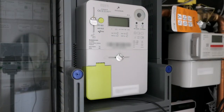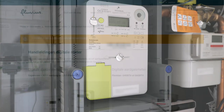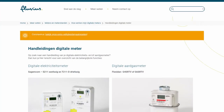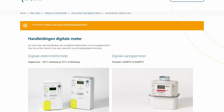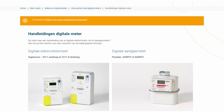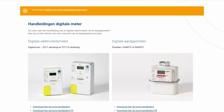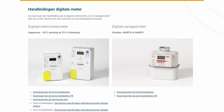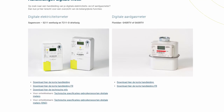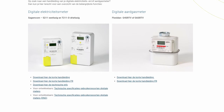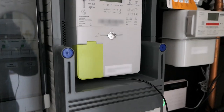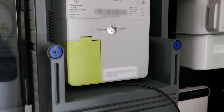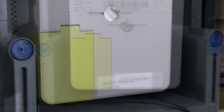First, a bit more about the meter. Fluvius, that's the name of my energy distribution company, is using three different types of meters: one for single-phase installations, another for three-phase installations, and finally a natural gas meter that uses the digital meter to send its data. The electricity meters have two serial ports on the front of the device, behind the yellow cover.